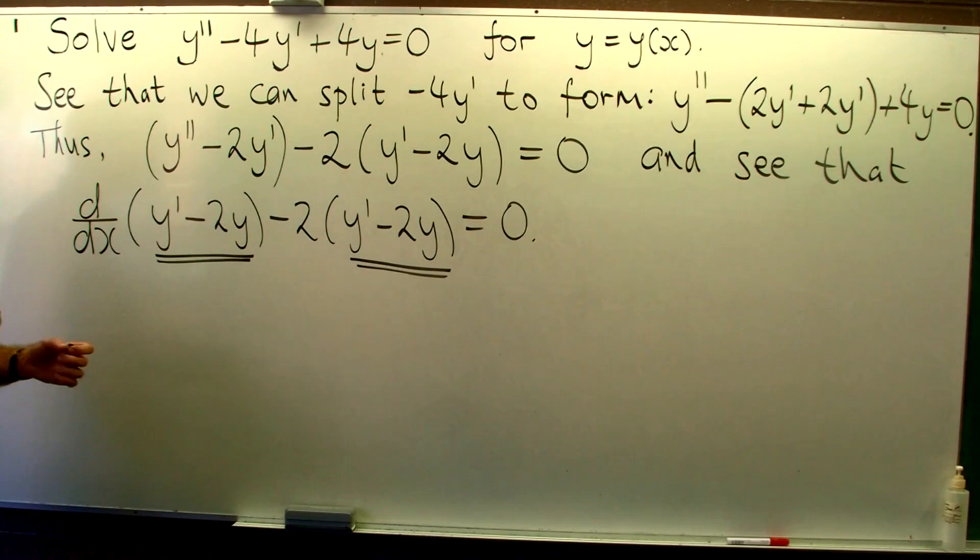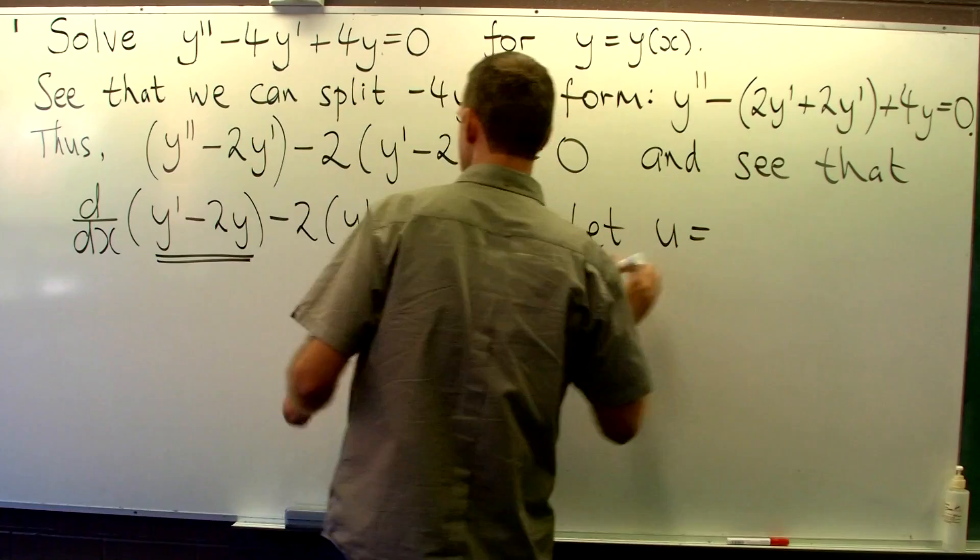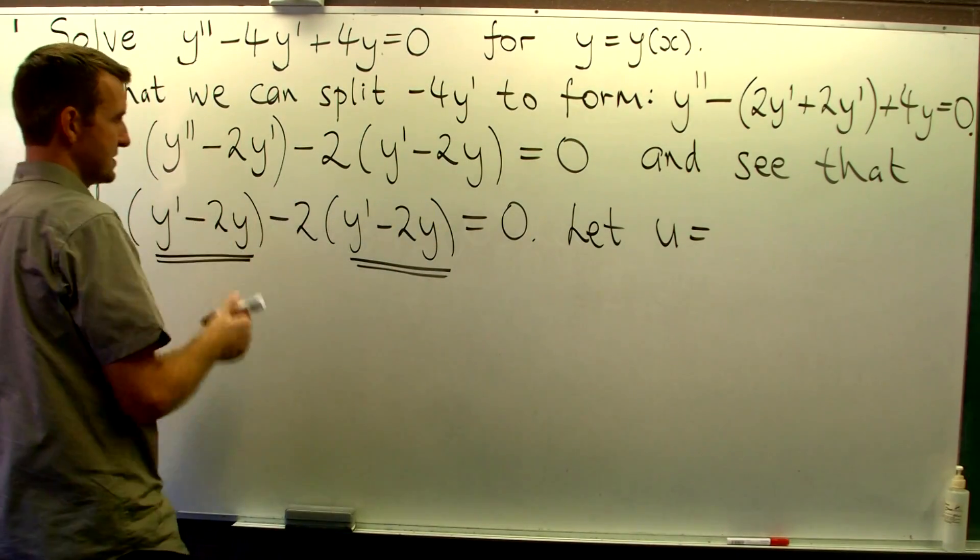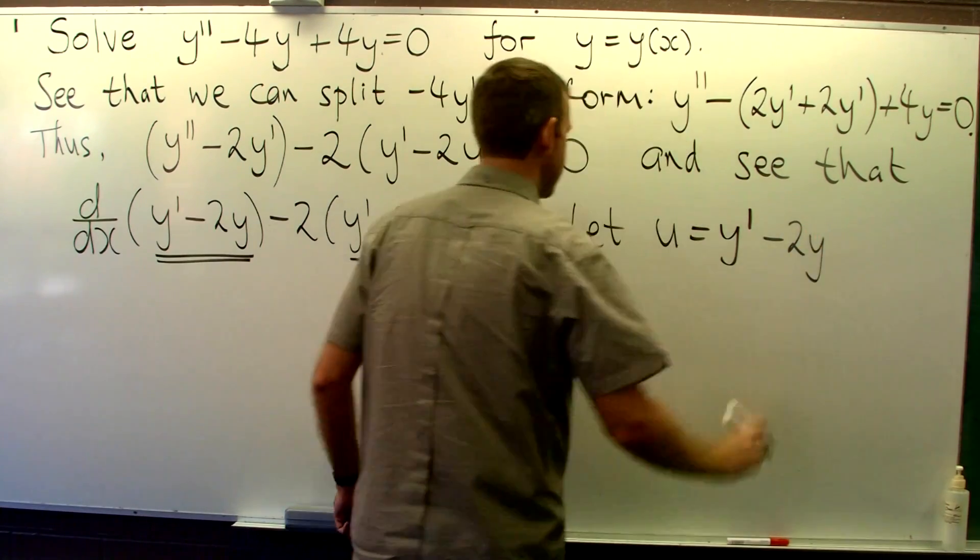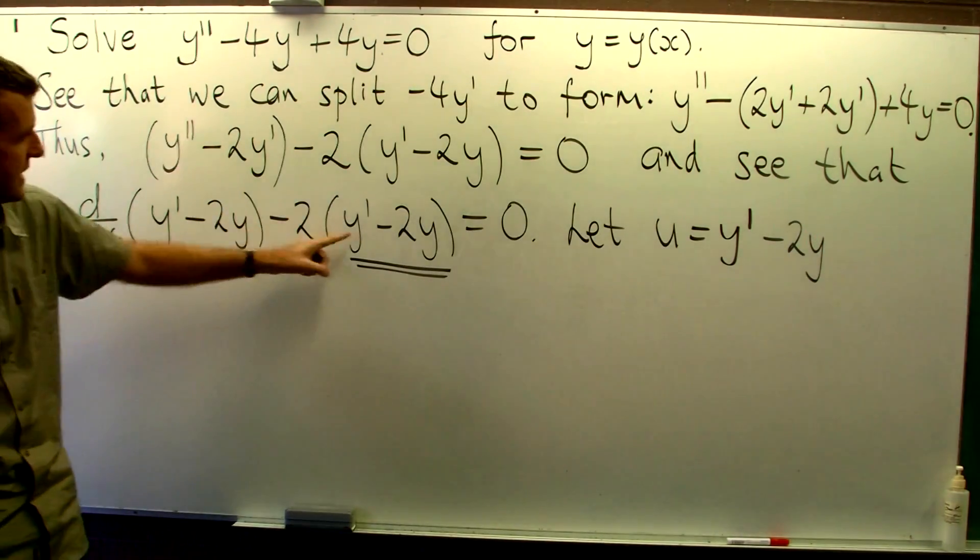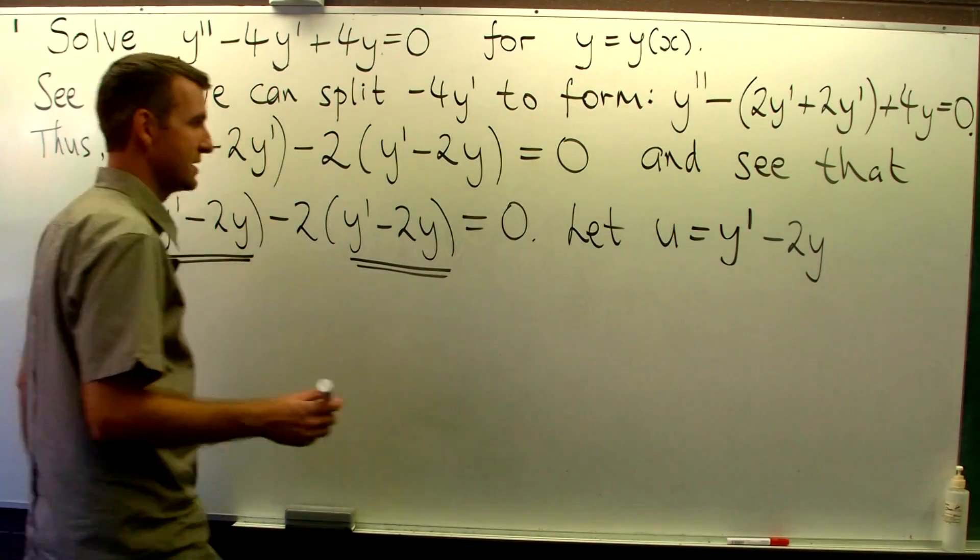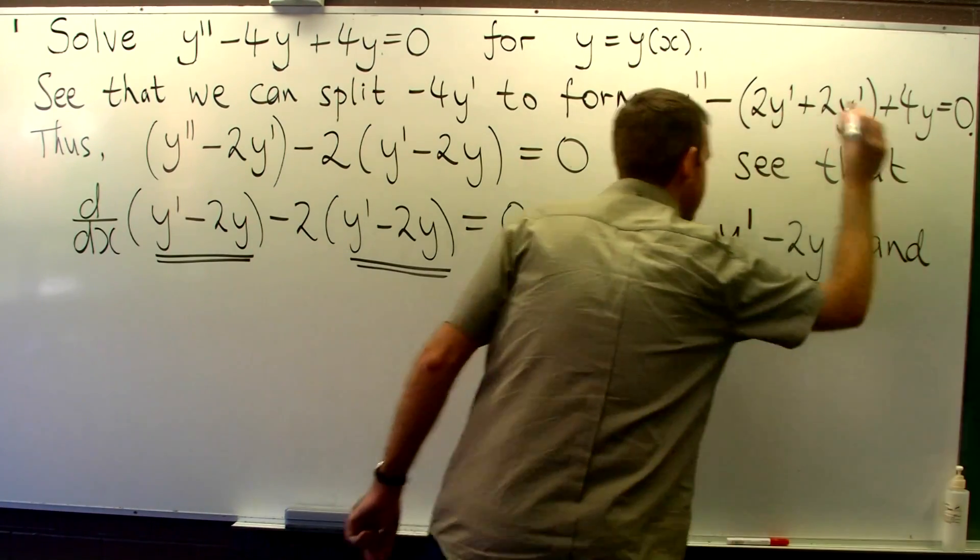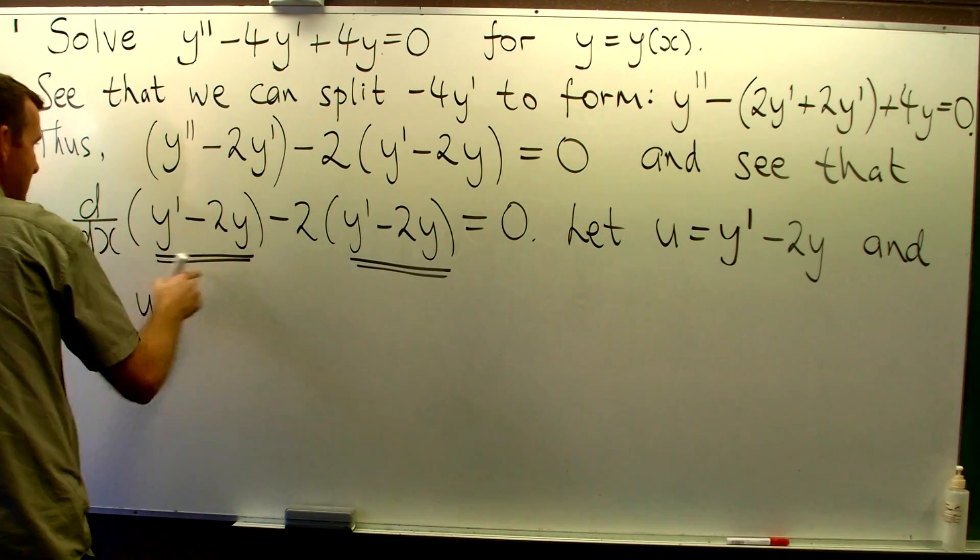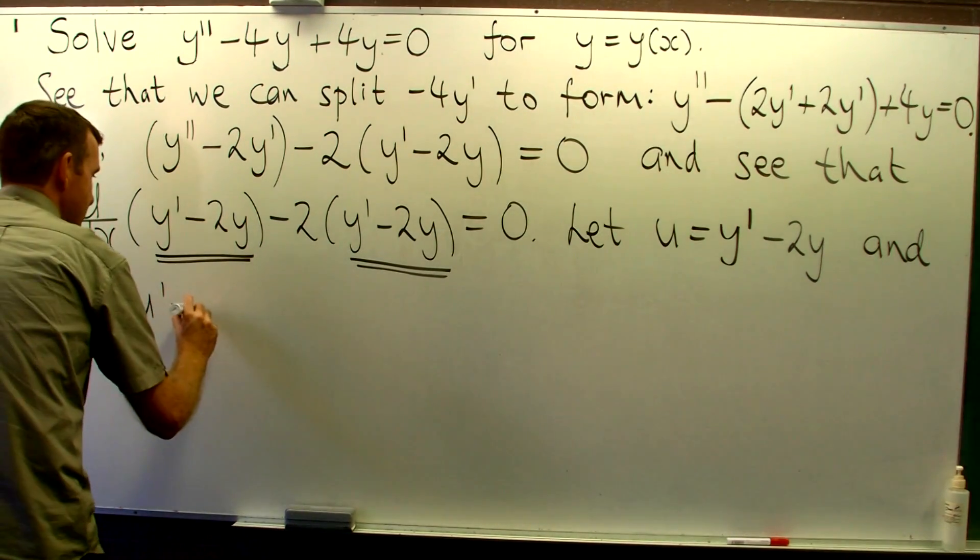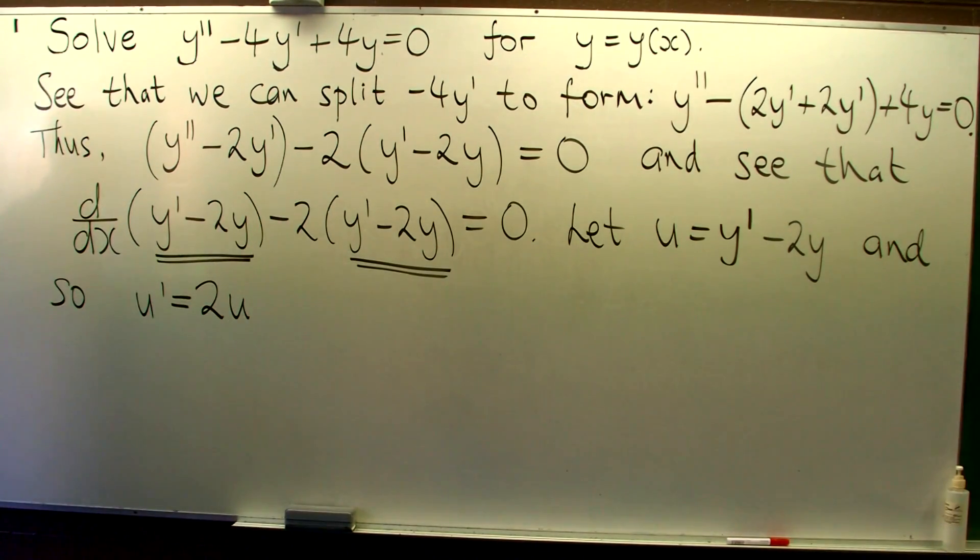We can now make our substitution. So I'm going to let u equal what's in these brackets. If I substitute in for u here and here, our second order differential equation becomes a first order one. So we're going to get u' for this term and rearranging, we're going to get u' equals 2u.